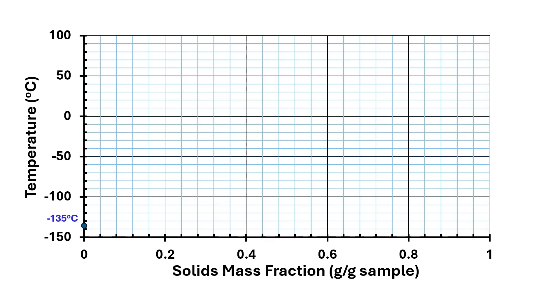The state diagram should be the first tool to determine food stability during processing and preservation. It has wide applications in foods — you could find a few applications in the links given in the description box. In this video I am going to explain: first, a state diagram overview; second, freezing points; third, eutectic points; and fourth, glass transition temperatures.